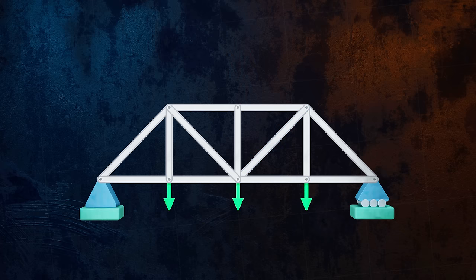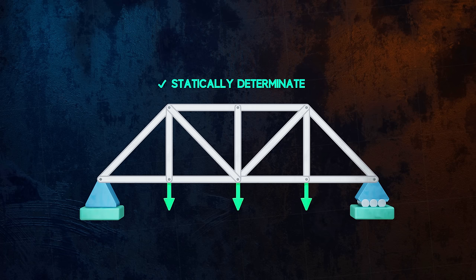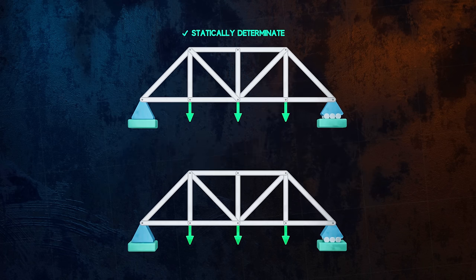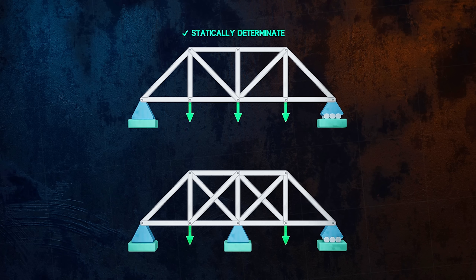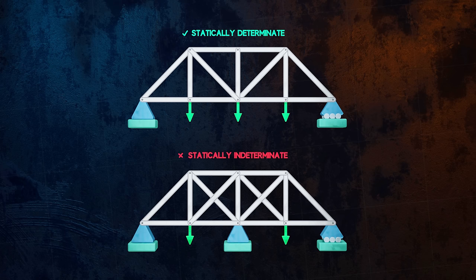If it is possible to determine the reaction forces and the internal forces in the members of a truss by applying the equilibrium equations, the truss is said to be statically determinate. Real life structures sometimes contain more members than are needed for stability, as this makes them safer. This means we may not be able to apply the method of joints or method of sections, because we have too many unknowns and not enough equilibrium equations. These trusses are said to be statically indeterminate, and would need to be solved using other methods like the force method or the displacement method.